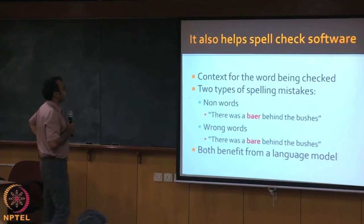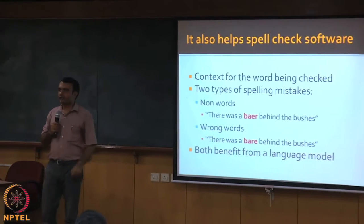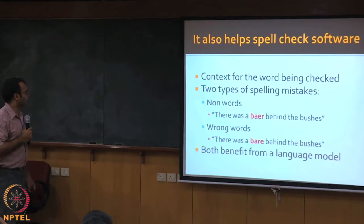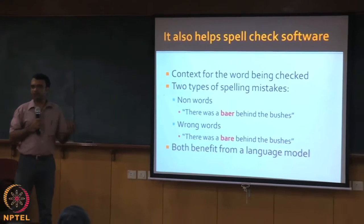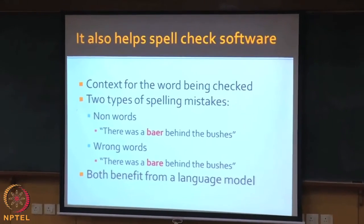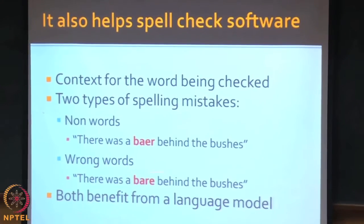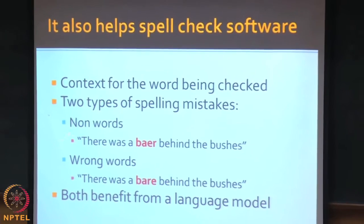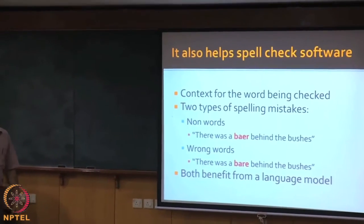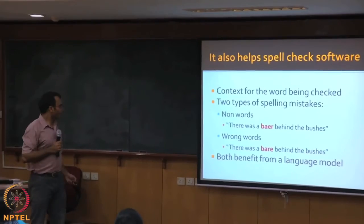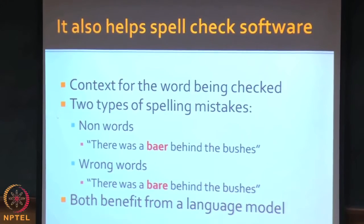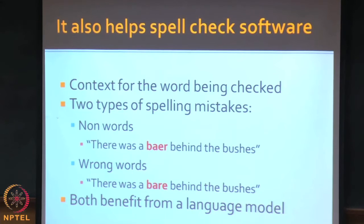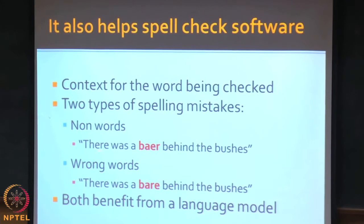This also helps spell check software. A language model gives you context for the words being checked. There are different types of mistakes in spell checking. One way to categorize them: there are non-words and there are wrong words. A non-word is something like 'BAER' — not a word at all. A wrong word is one that is actually in the dictionary but is not the right word in context, for example confusing 'bare' for 'bear.' Both of these benefit from the n-gram language model and more sophisticated models to resolve these mistakes.